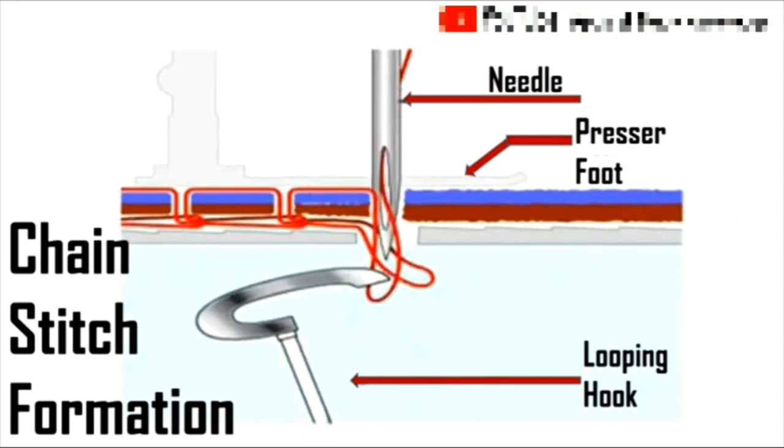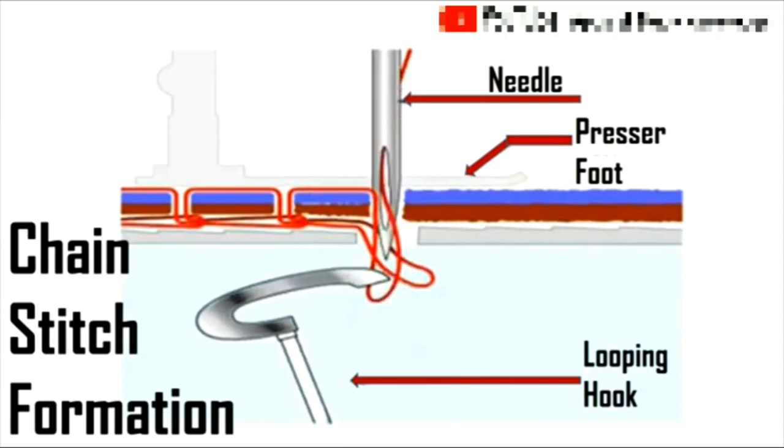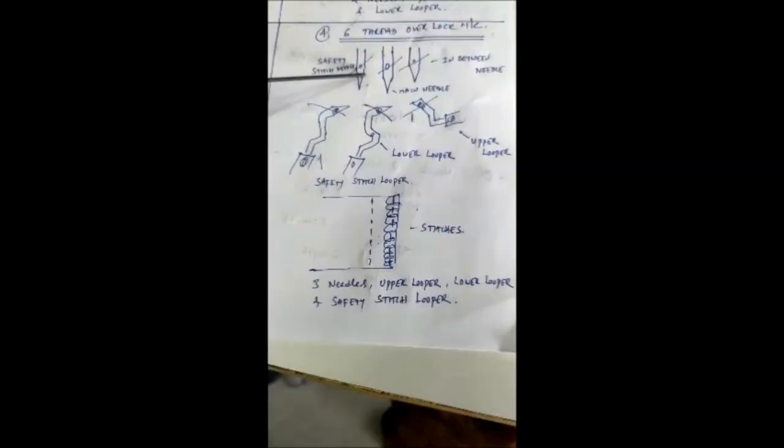Observe the needle thread catching by looper and chain stitch formation on fabric. At the top side, we are getting flat stitches and at the bottom side, we are getting a chain formation of stitches.